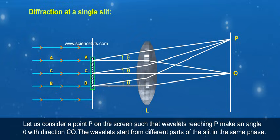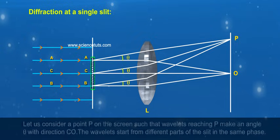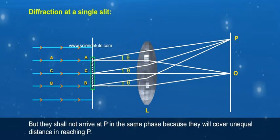The wavelets start from different parts of the slit in the same phase, but they shall not arrive at P in the same phase because they will cover unequal distance in reaching P.